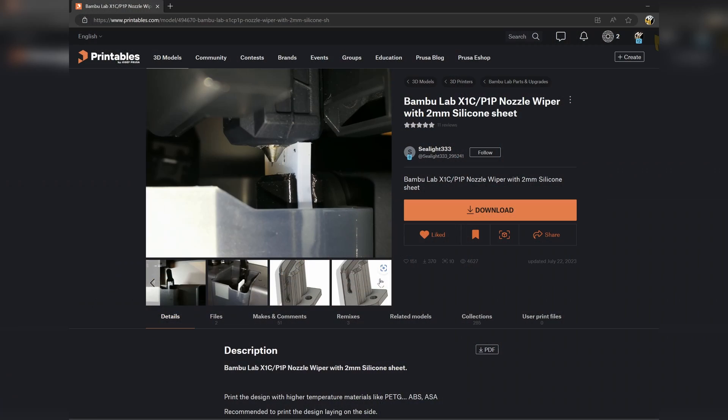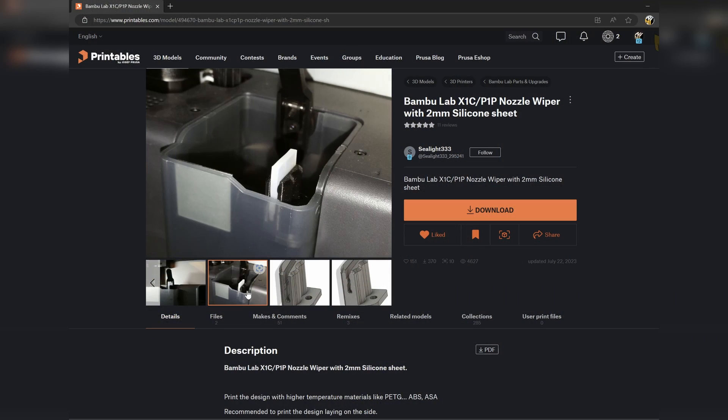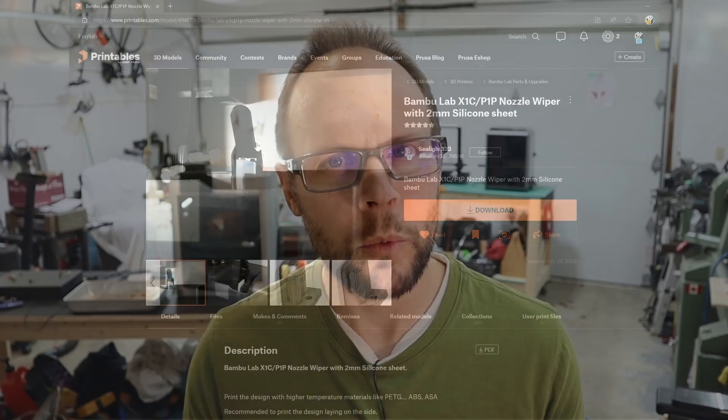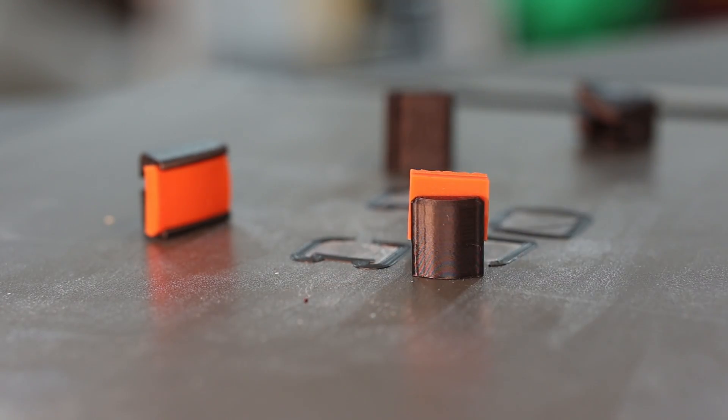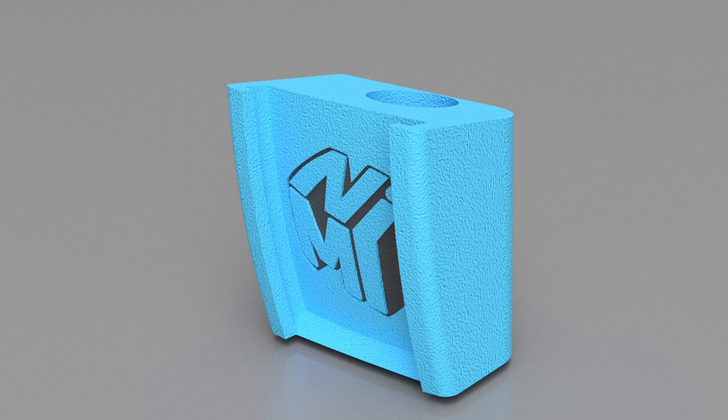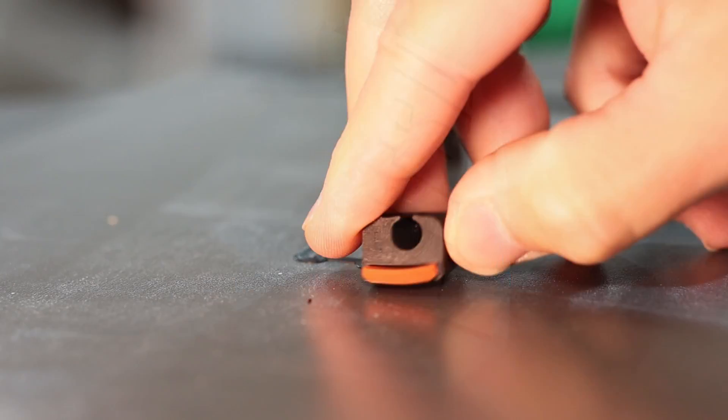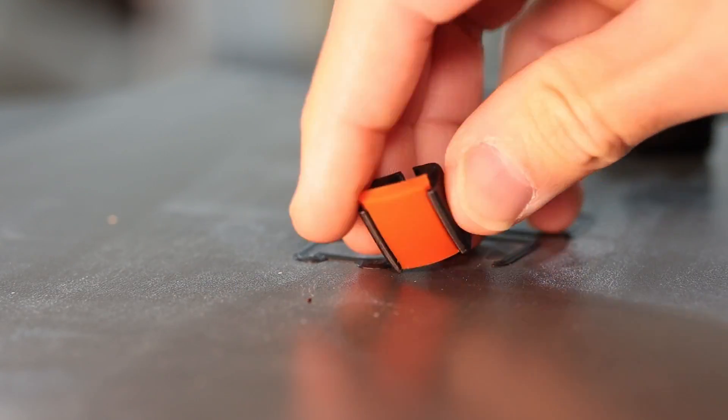So some of you may have already had this problem before and have gone looking for different solutions. One of the solutions that's out there is to use a silicone nozzle wiper. In my experience with the silicone wiper, it does not work as reliably as the stock version. I actually went ahead and designed my own version as well, and it still didn't work. Maybe it'll work better for you. I will link that in the description below if you'd like to try it out on your own.